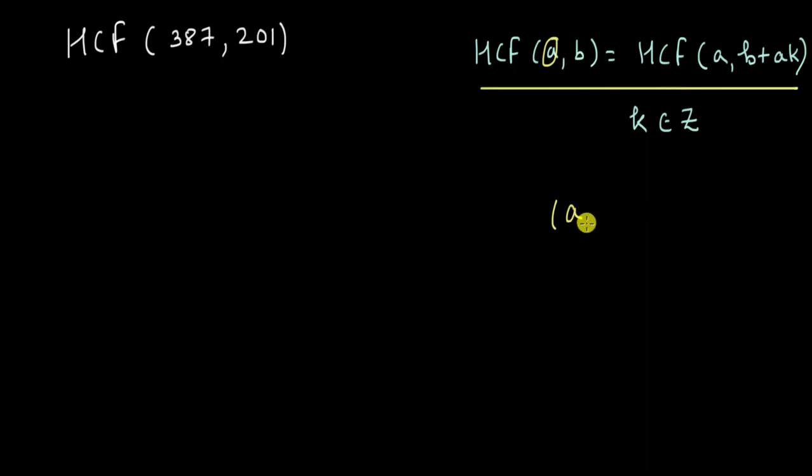So keep one of the numbers the same and add or subtract any multiple of that number into the second number. Okay let's try to use this. So 387 and 201.